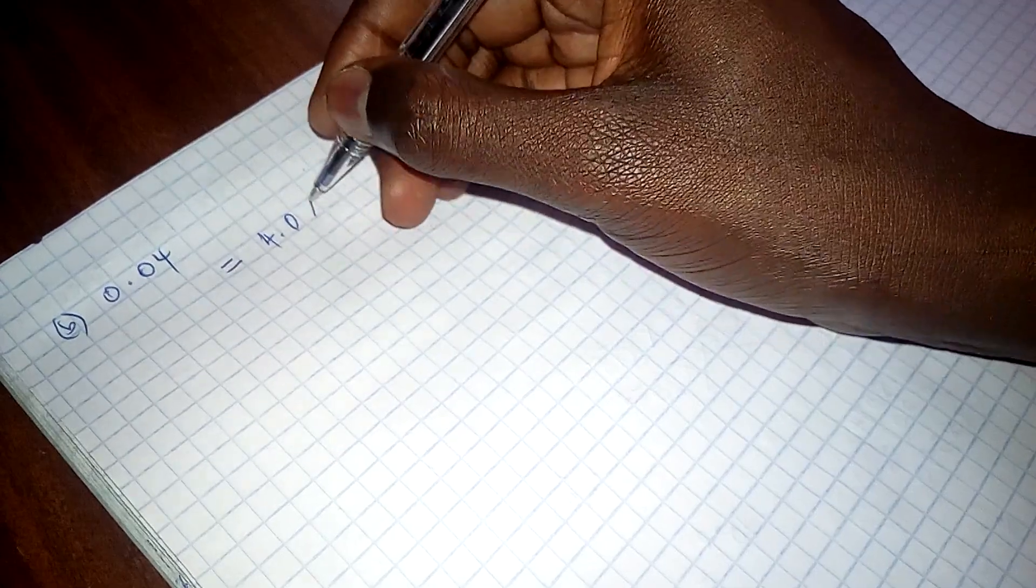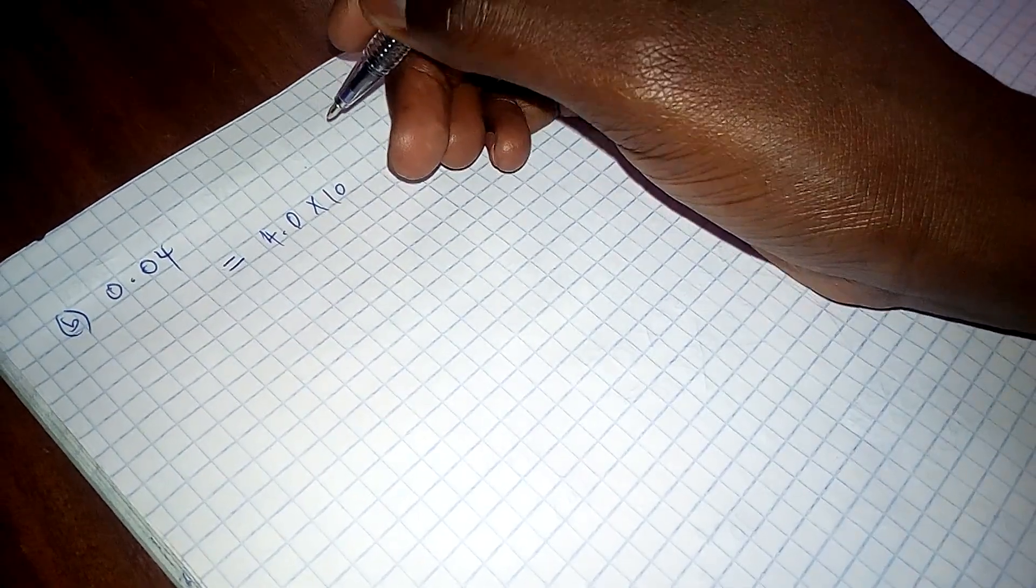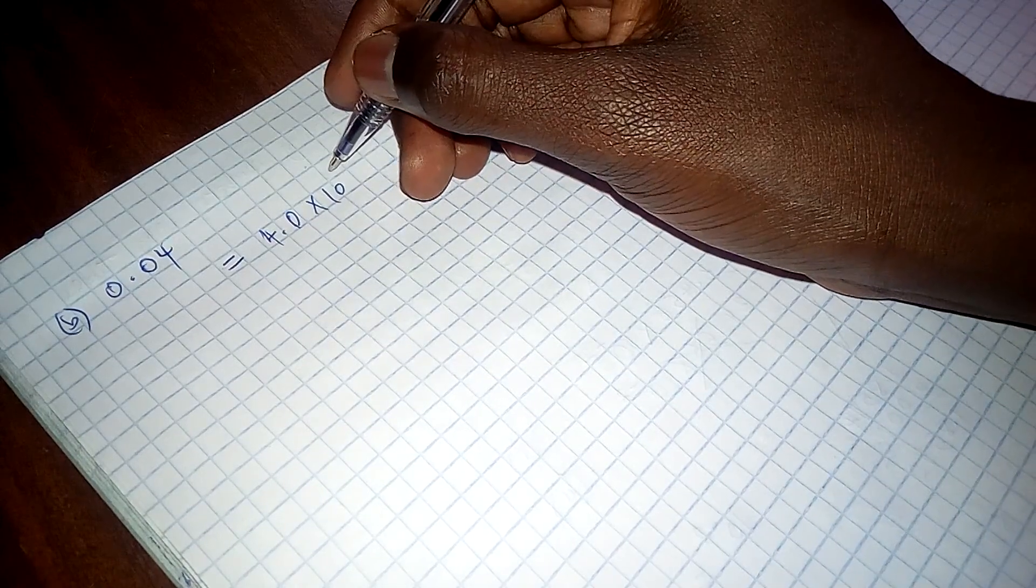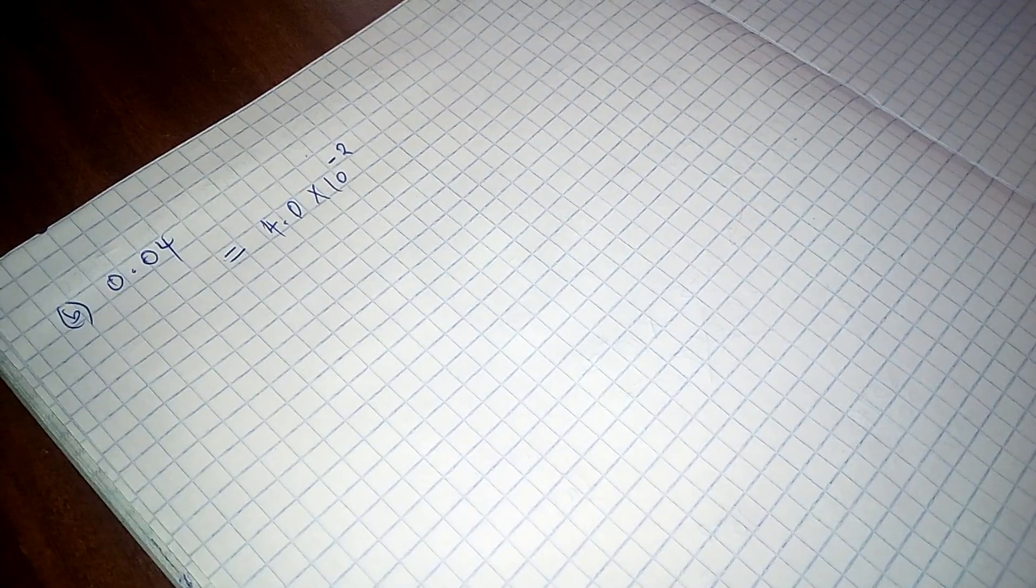So we have 4.0 times 10. Because it has moved twice from left to right, the power here becomes a negative. So that is what we have.